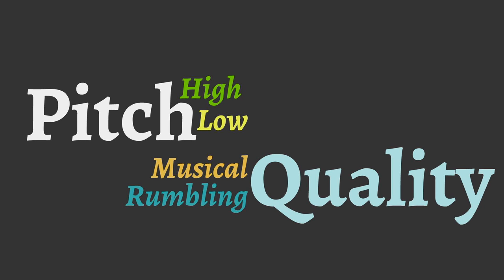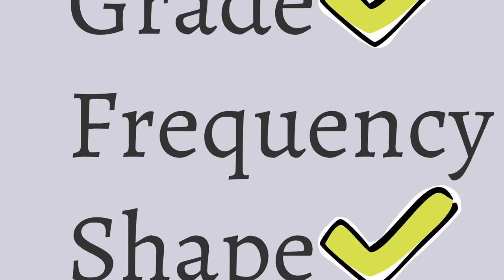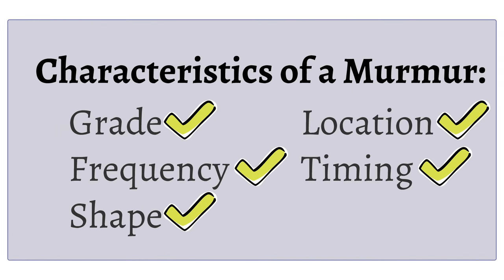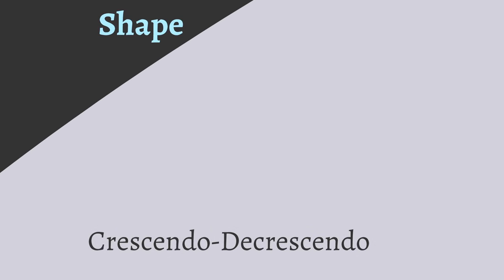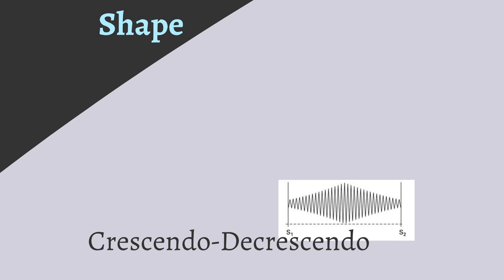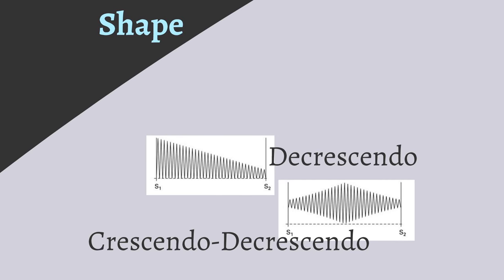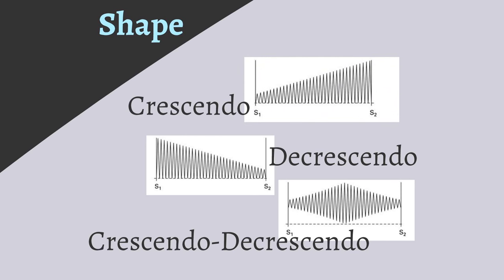The configuration of the murmur is also very important. Configuration describes how a murmur changes with time. For example, a crescendo-decrescendo murmur is when a murmur rises in intensity then decreases, while a decrescendo murmur decreases in intensity with time. On the other hand, a crescendo murmur increases in intensity and a plateau murmur remains unchanged.